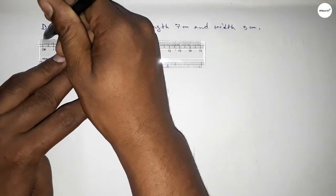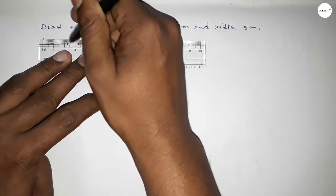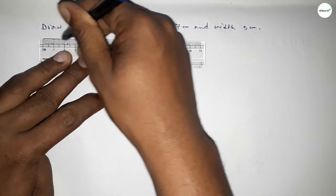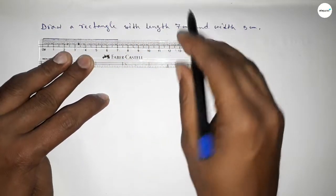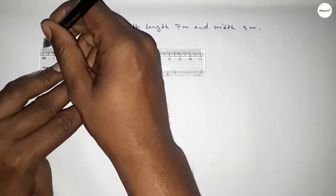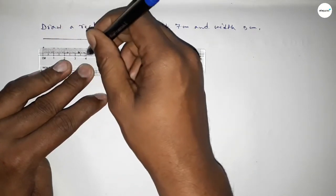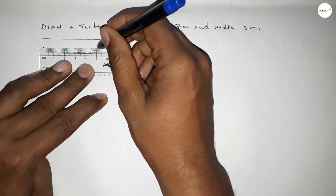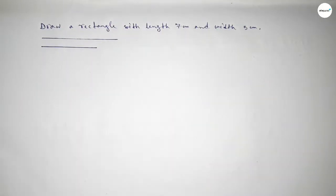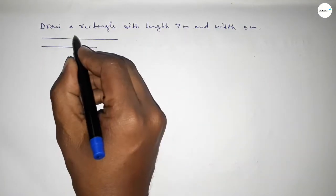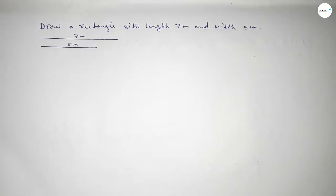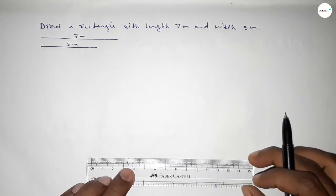First we have to draw the length 7 centimeter — this is 7 — then the breadth 5 centimeter, starting from 0: 1, 2, 3, 4, 5. So this is 5. This one is 7 centimeter and this one is 5 centimeter.